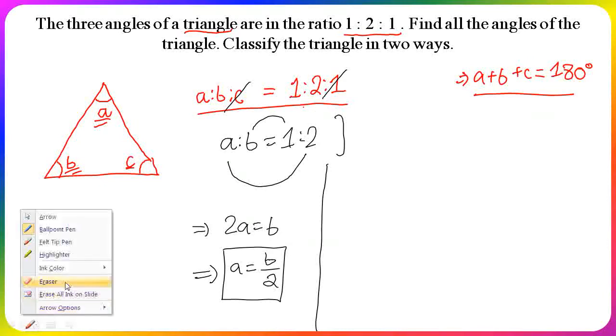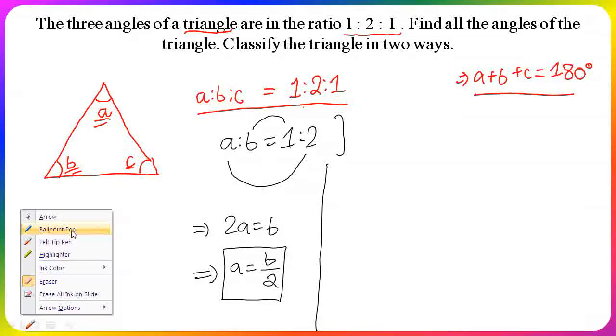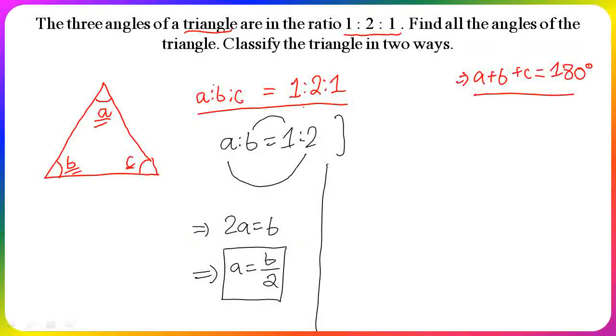Now I have cancelled the C term. Next, I am going to cancel the first term, the A term. Simplifying the ratio, we get B:C = 2:1.